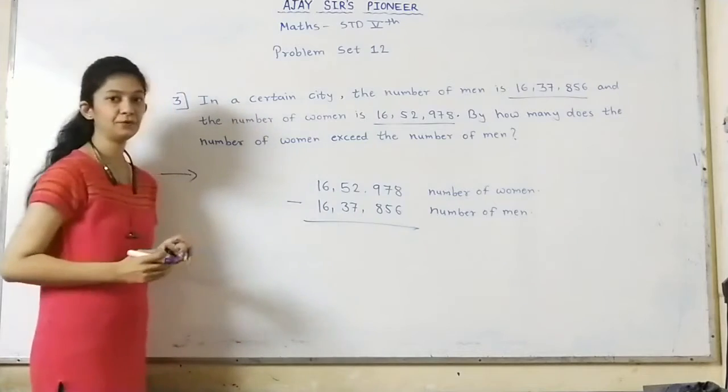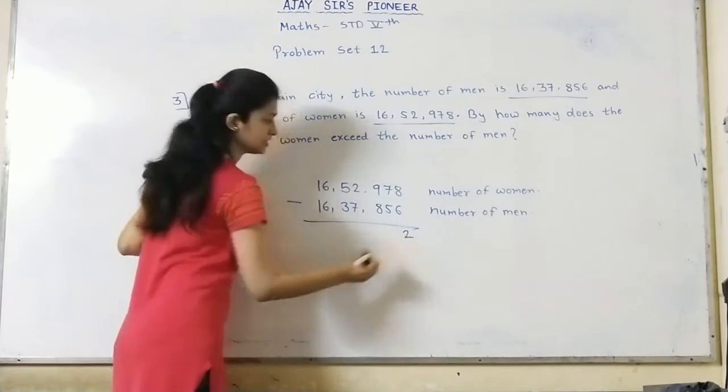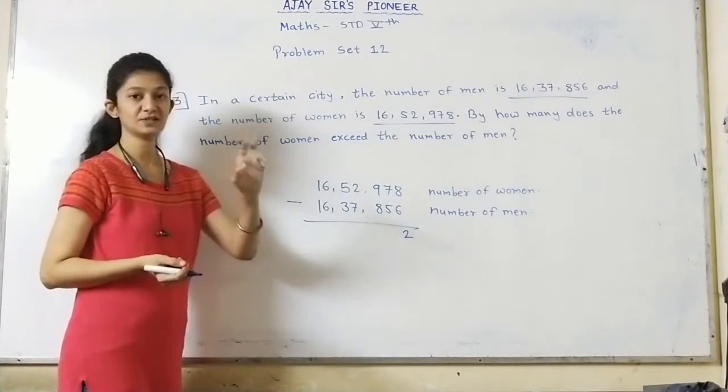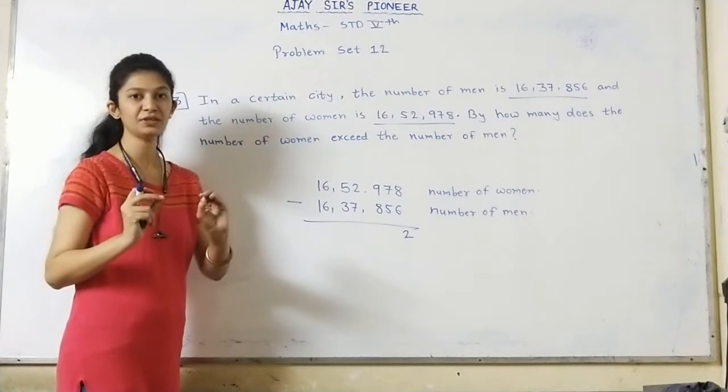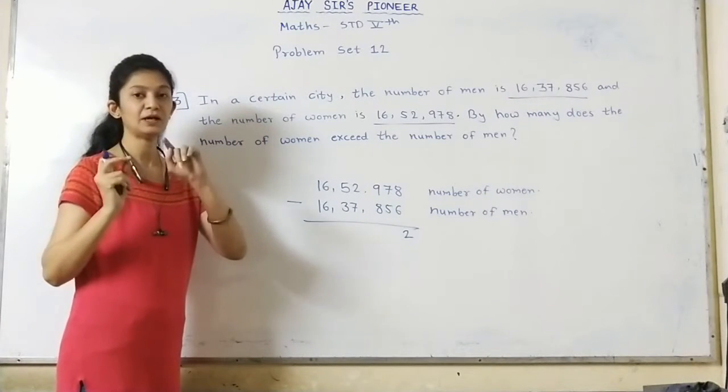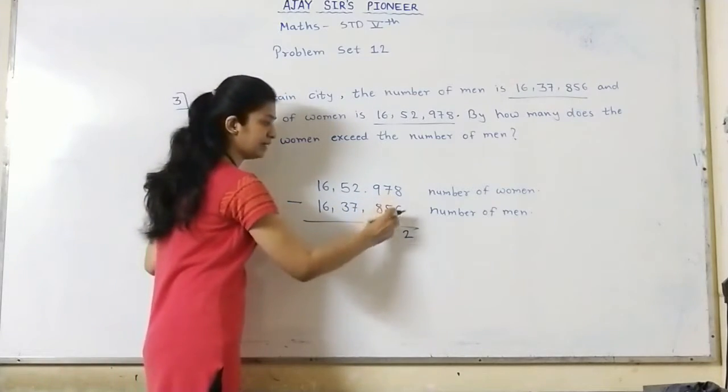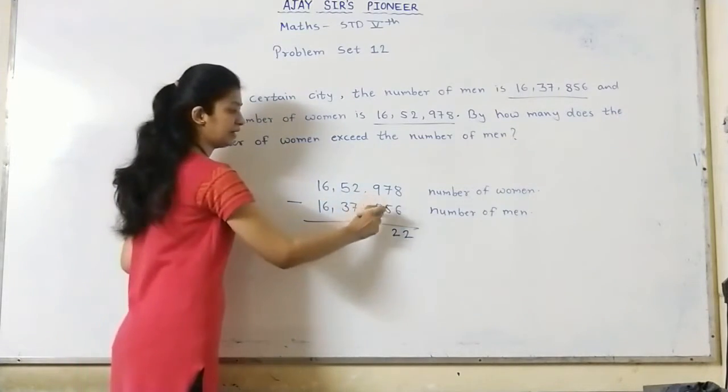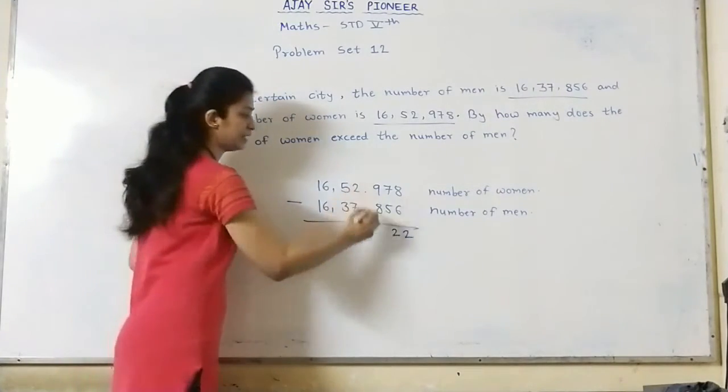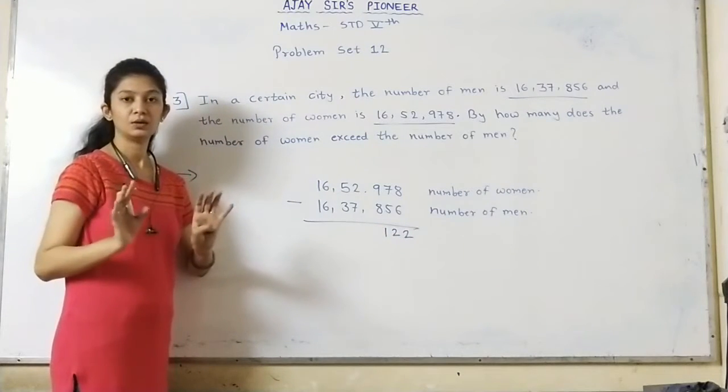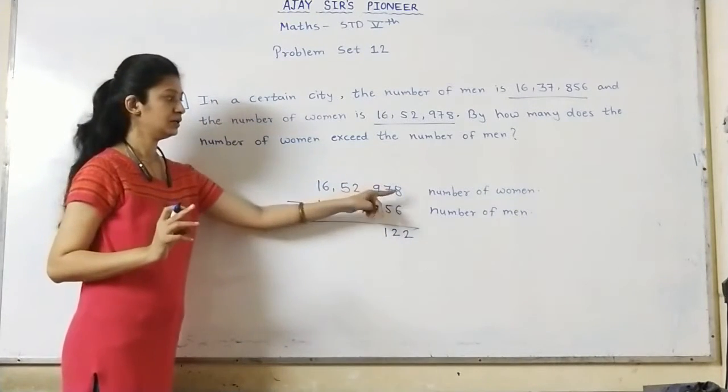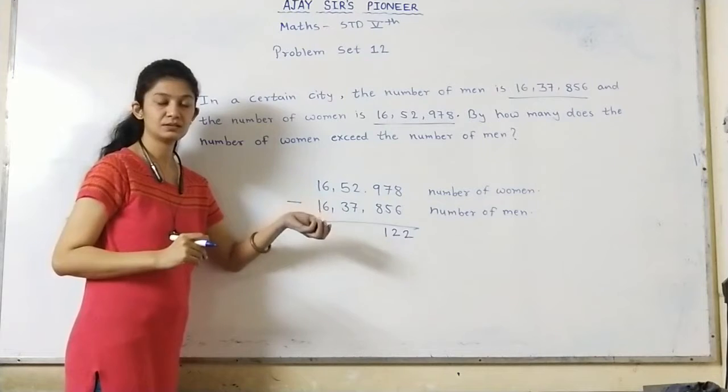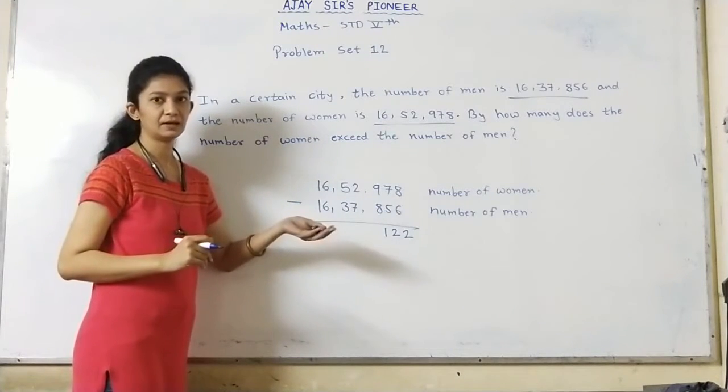8 minus 6, start from units place. 8 minus 6 is simply possible because 6 is smaller than 8, so we don't need to borrow. If the upper number is bigger, we don't need to borrow. Then 7 minus 5, yes possible, equals 2. Next, 9 minus 8, yes possible, equals 1. So no need to borrow because the top position has the bigger number.